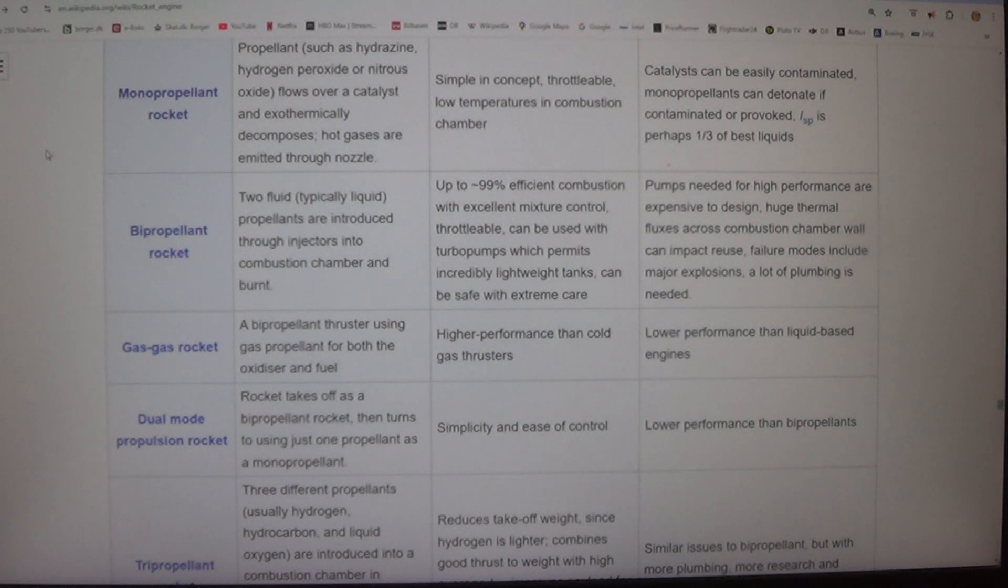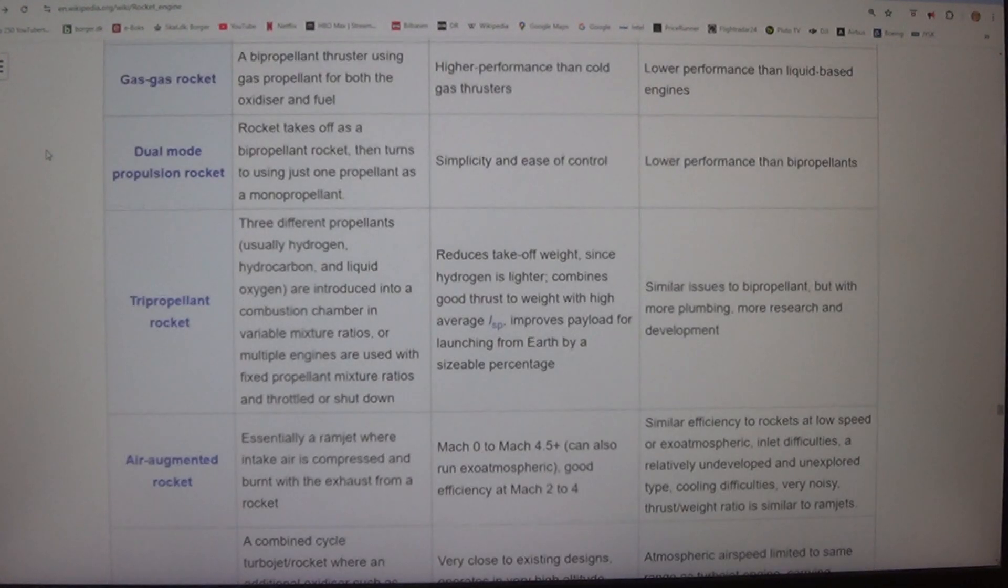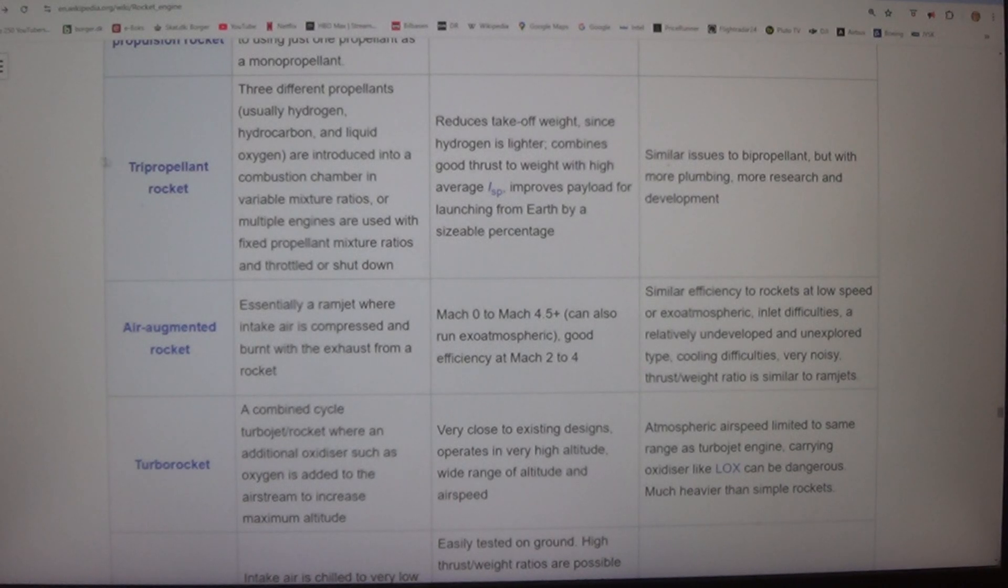Tri-propellant rocket - three different propellants, usually hydrogen, hydrocarbon, and liquid oxygen, are introduced into a combustion chamber in variable mixture ratios, or multiple engines are used with fixed propellant mixture ratios and throttled or shut down. Reduces take-off weight since hydrogen is lighter. Combines good thrust-to-weight with high average ISP. Improves payload for launching from Earth by a sizable percentage. Disadvantages: Similar issues to bipropellant but with more plumbing. More research and development.